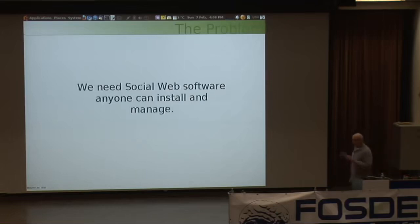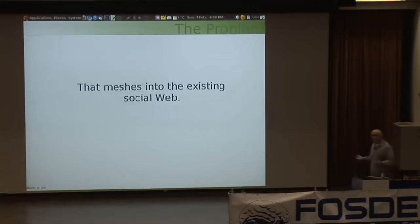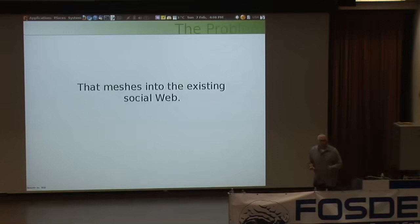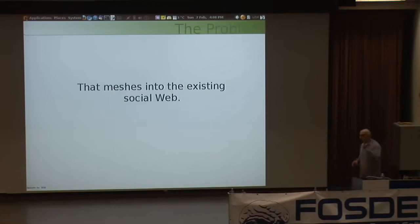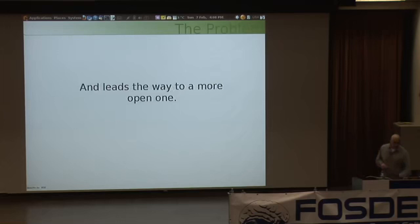We need social software that we can own, that we can install and manage ourselves. We need social software that meshes into the existing social web. The social web right now is huge — Facebook has like 400 million users, Twitter's got another 70 million users, MySpace has God knows how many. It's like billions of people using the social web. If we think we're going to transfer everyone to a different social web, that's just not happening. We have to mesh into what exists right now.